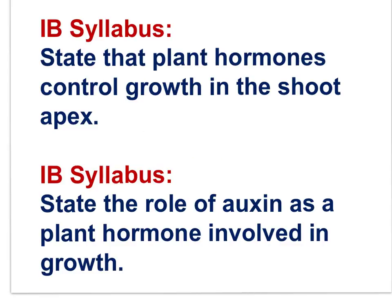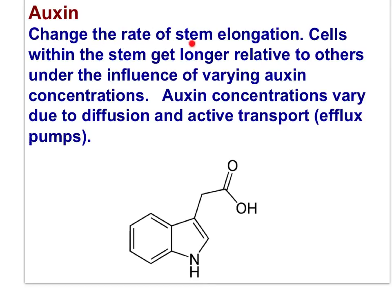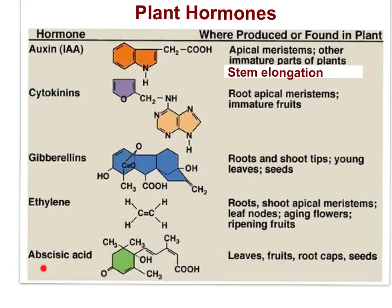That leads us to these IB syllabus statements: State that plant hormones control growth in the shoot apex, and state the role of auxin as a plant hormone involved in growth. Plants have hormones that influence various events. Auxin and gibberellin are both important in stem elongation. Ethylene is important in fruit ripening and leaf drop. Auxin plays a role in the elongation of stems and roots, and auxin concentrations vary due to diffusion and active transport.